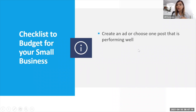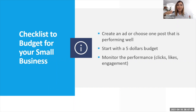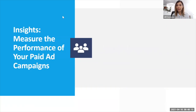Here's the budget checklist: create an ad or choose one post that is performing well, start with a $5 budget, and monitor that performance. You have to monitor — it's not good to create a paid ad and then come back a month later to see what happened. If you're paying $5 to engage people and people are commenting and asking questions, and you're not following up, it's just wasted money — no matter that it's only $5.